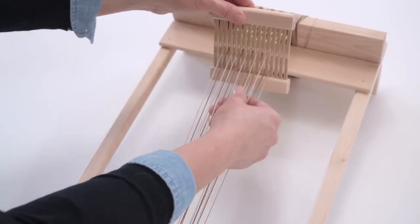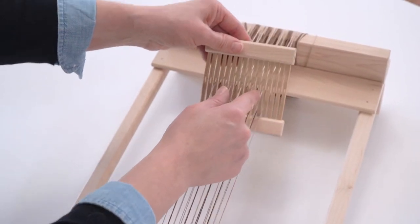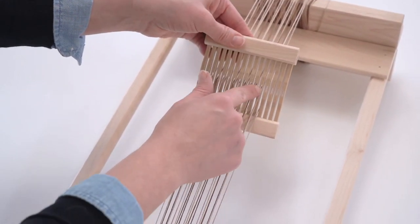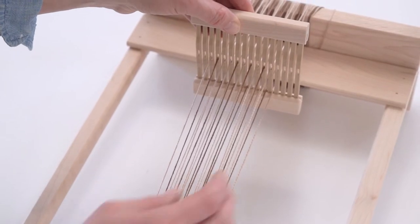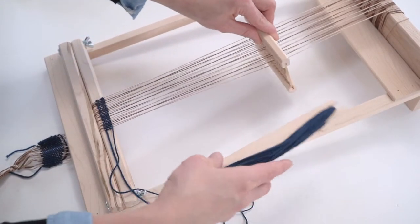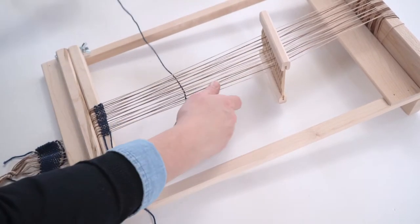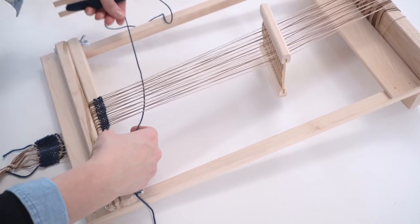The purpose of the heddle is that every other yarn is either in a hole or a slot so that when you're holding it up, you've got your up shed and then when you push it down, you have your down shed. So every time you're just passing the stick shuttle through, it does all the work for you.